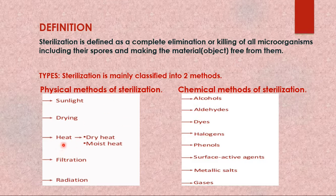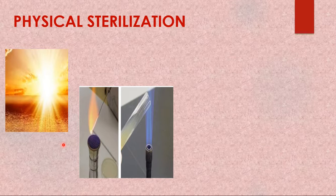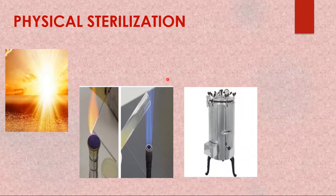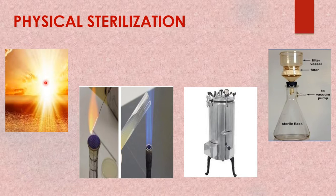Physical methods of sterilization majorly depend upon the nature of the organisms. We use sunlight, then heat — which includes dry heat and moist heat methods — and then filtration and radiation. These are the different types of physical methods of sterilization.